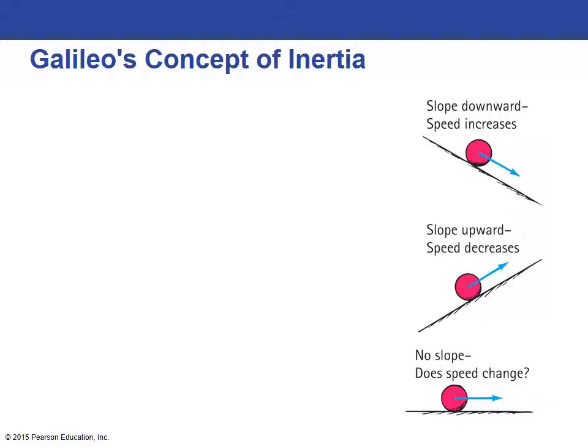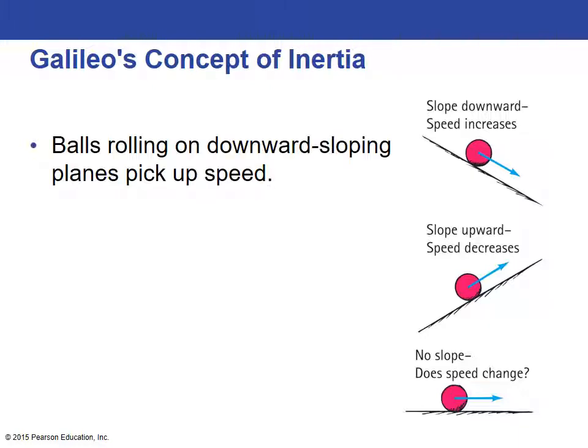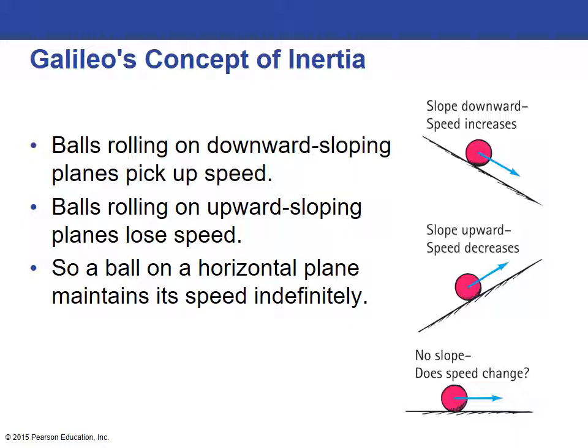One of the things Galileo observed with a ball on an inclined plane is that if it were going down the hill — down the ramp — the speed would steadily increase. He inferred that on a flat surface with no incline, the ball is not going to speed up because it's not going downhill, and it's not going to slow down because it's not going uphill. By conclusion, the speed does not change, and without a force to stop it, it would maintain its speed indefinitely.